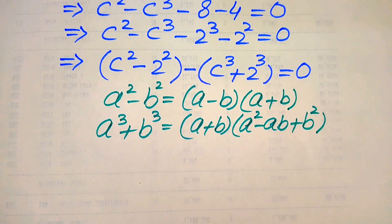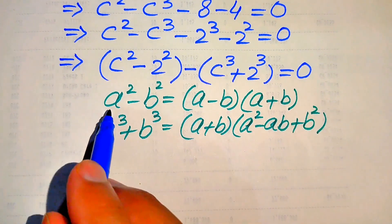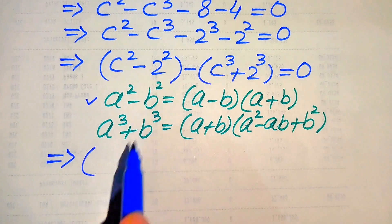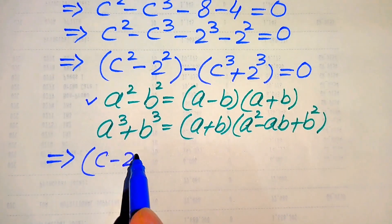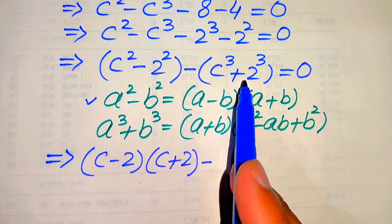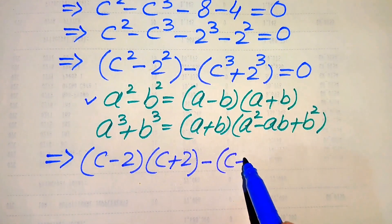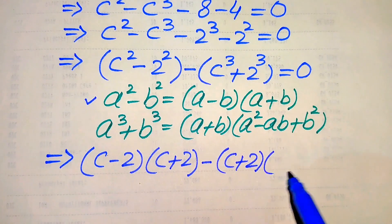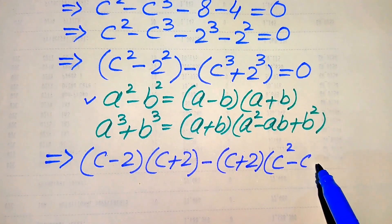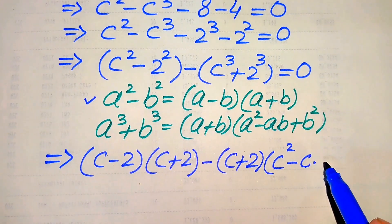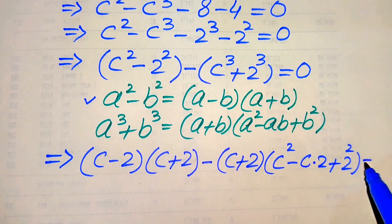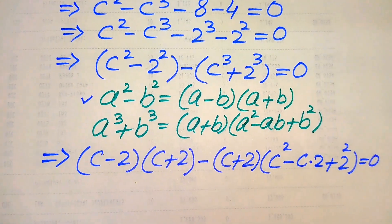Applying the difference of squares formula to the first factor, c squared minus 2 squared becomes (c minus 2)(c plus 2). Applying the sum of cubes formula, c cubed plus 2 cubed becomes (c plus 2)(c squared minus 2c plus 4), where a is c and b is 2. The whole equation equals 0.